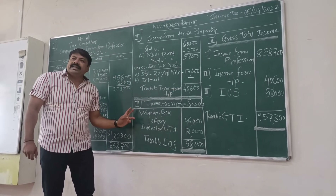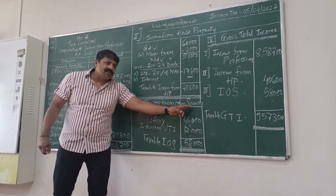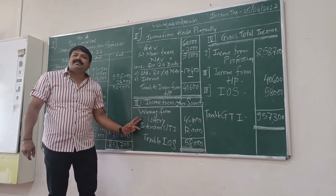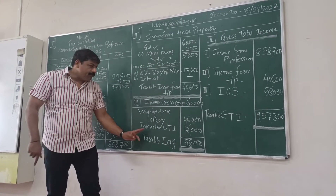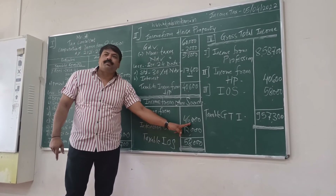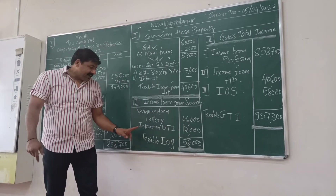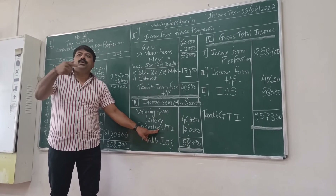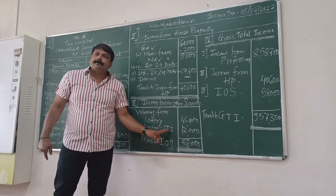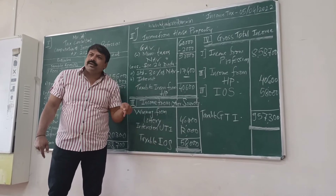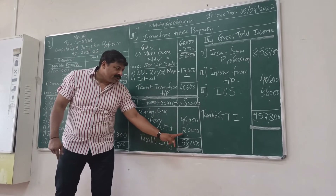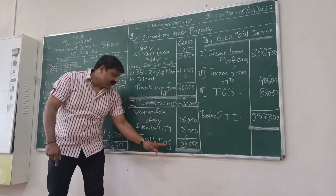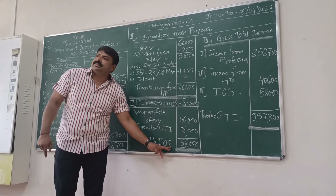Statement number three — income from other sources. Winning from lotteries is taxable; it is income from other sources: 26,000. And secondly, interest on investment in UTI (Unit Trust of India) is also taxable: 12,000. Combined, taxable income from other sources is 38,000.